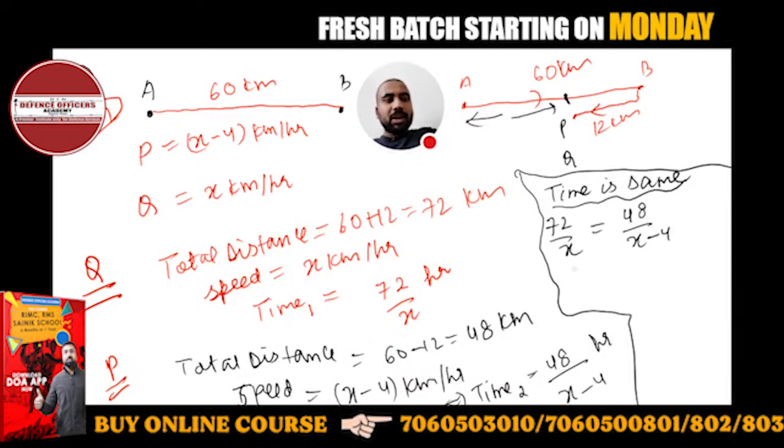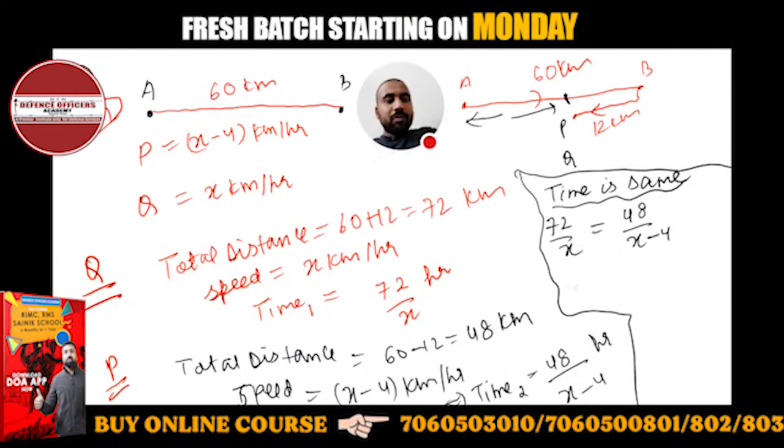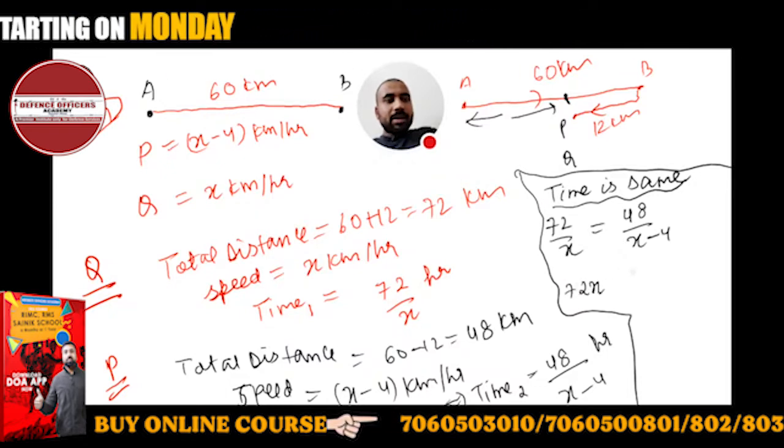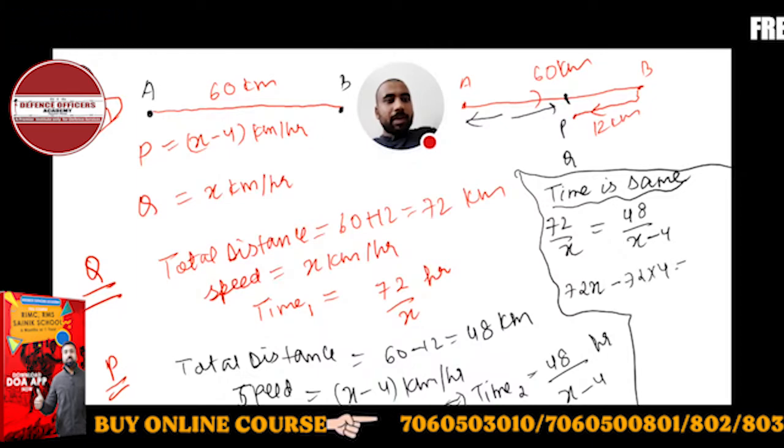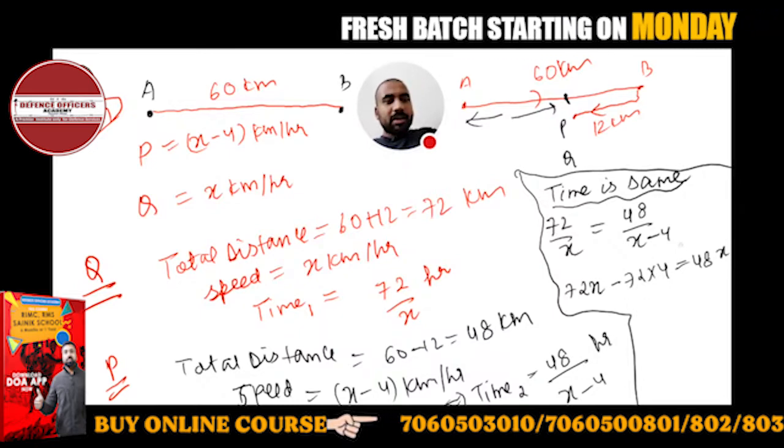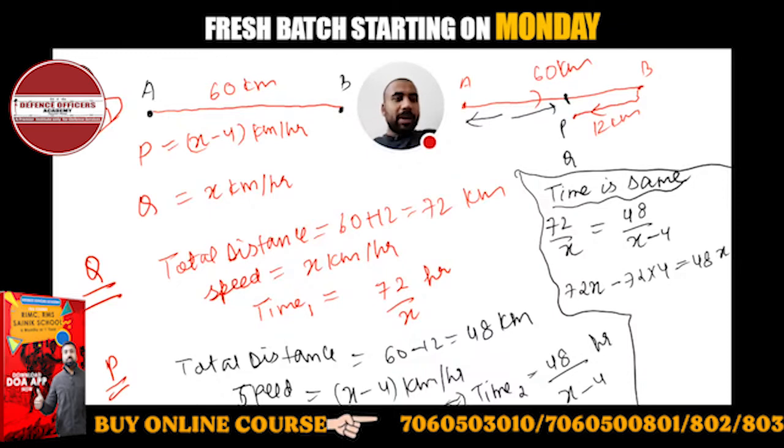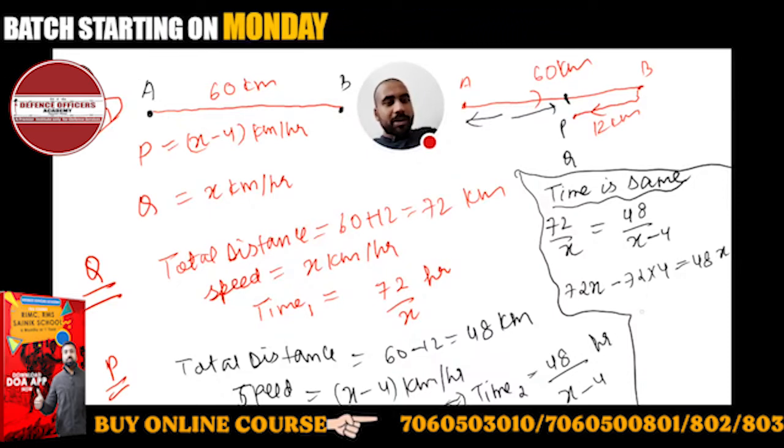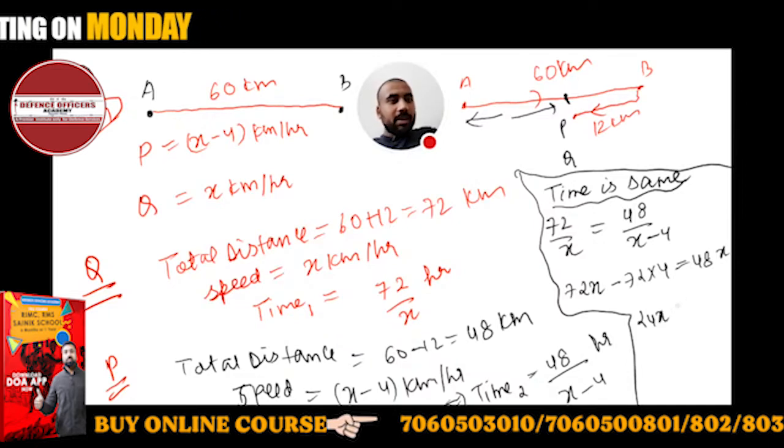Just do cross multiplication. This gives you 72x minus 72 times 4 equals 48x. So 72x minus 48x equals 24x. Therefore, 24x equals 72 times 4.